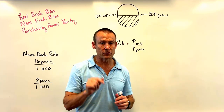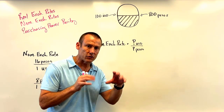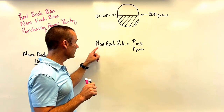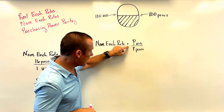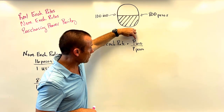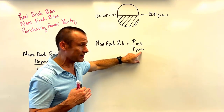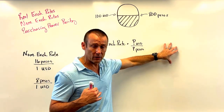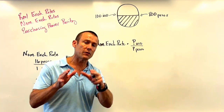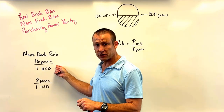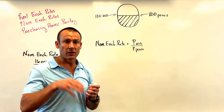Now we need to find the real exchange rate. The formula found in most textbooks is: the nominal exchange rate (16 pesos per USD) times the price of a market basket in the US priced in USD, divided by the price of the same market basket in Mexico priced in pesos. That gives you the real exchange rate. But rather than just using the formula, let's understand it conceptually.